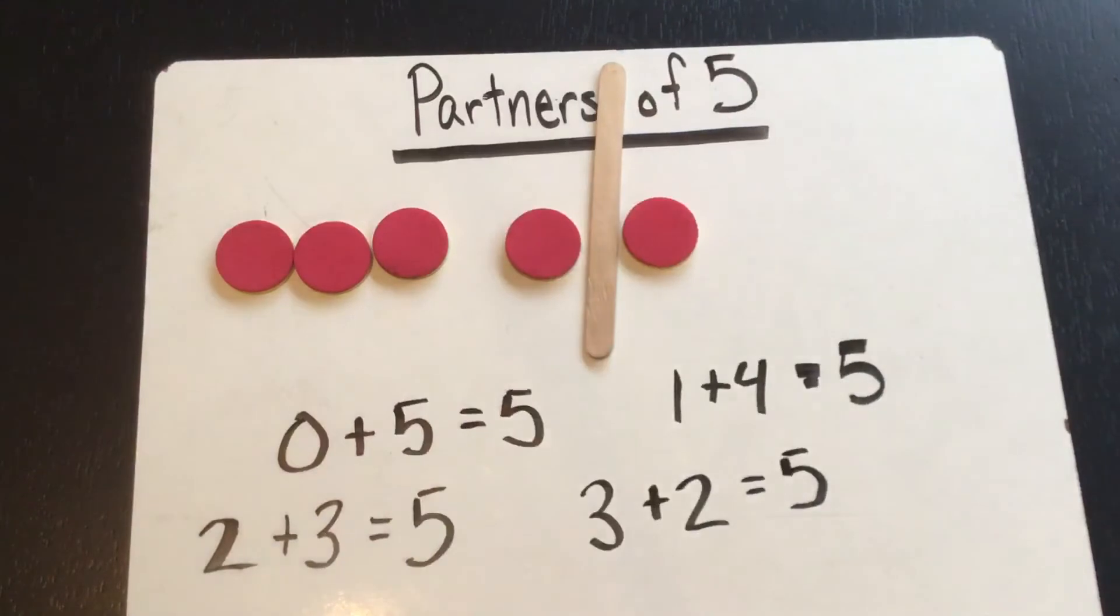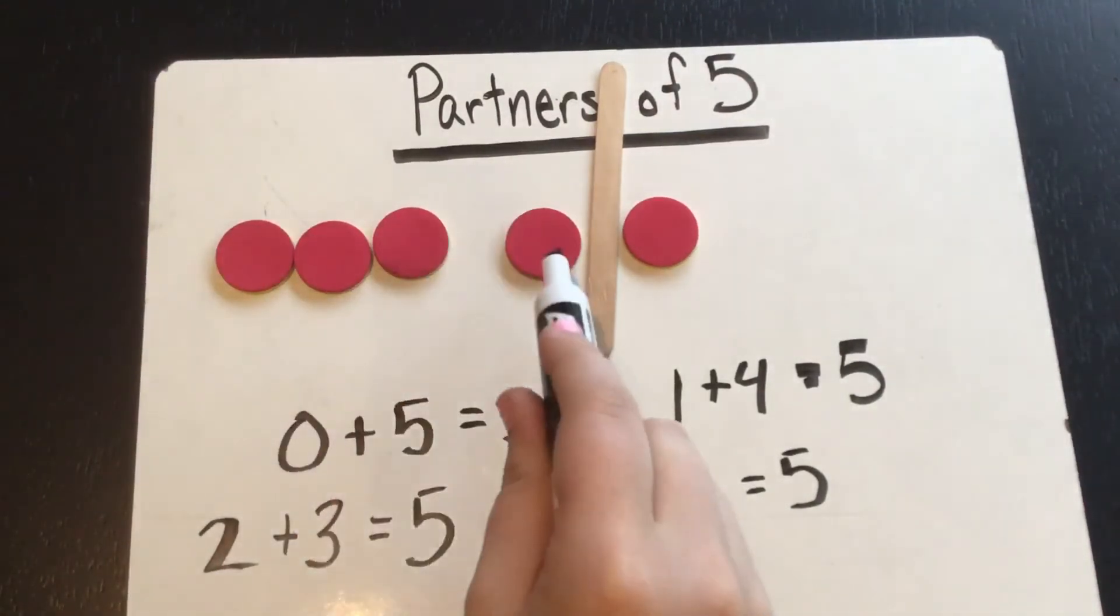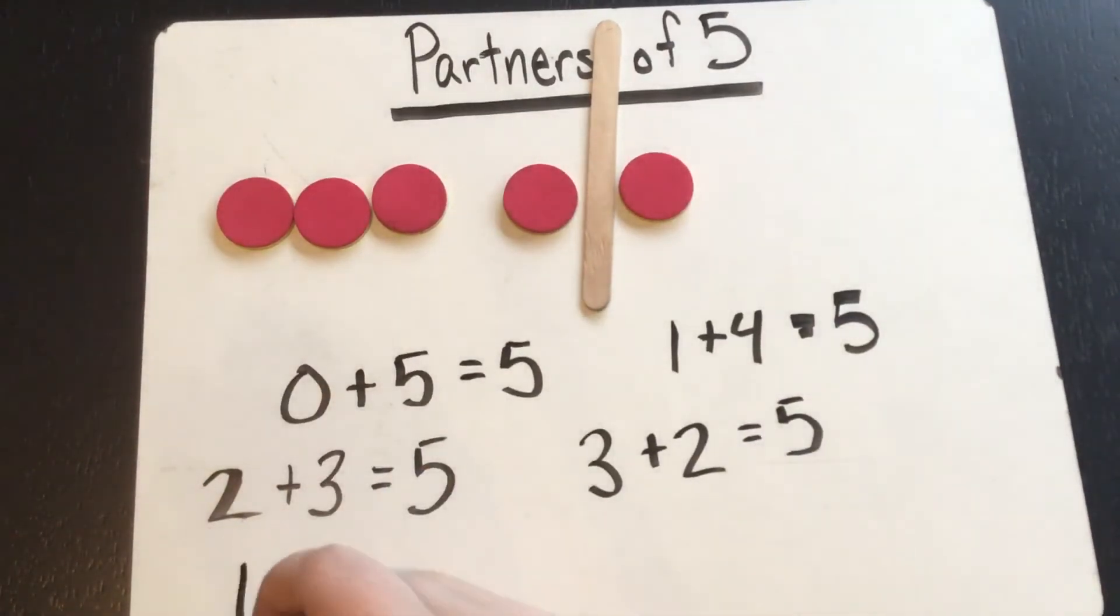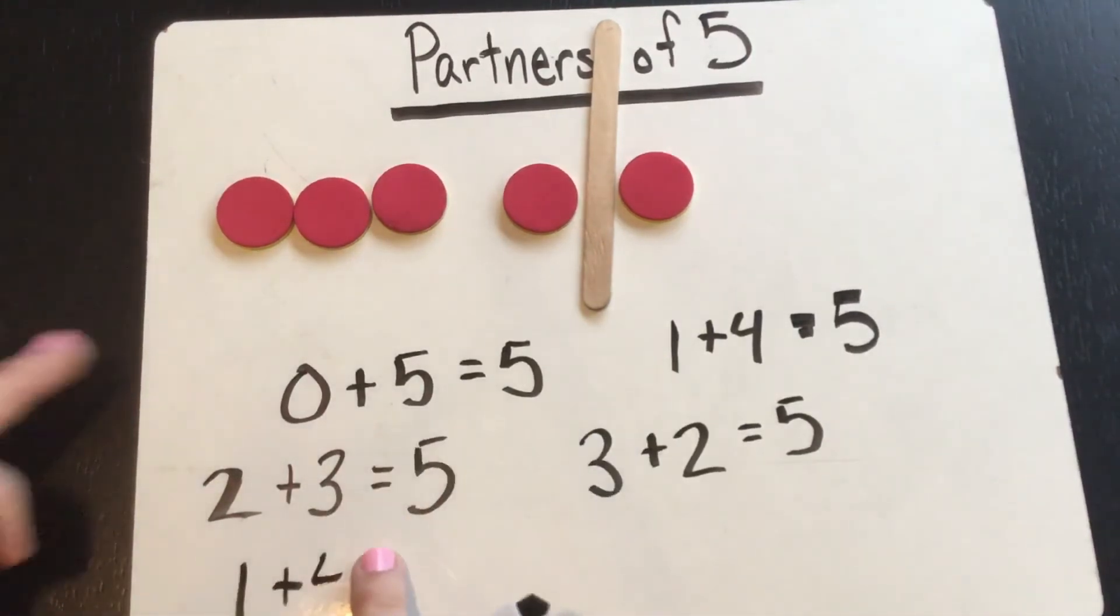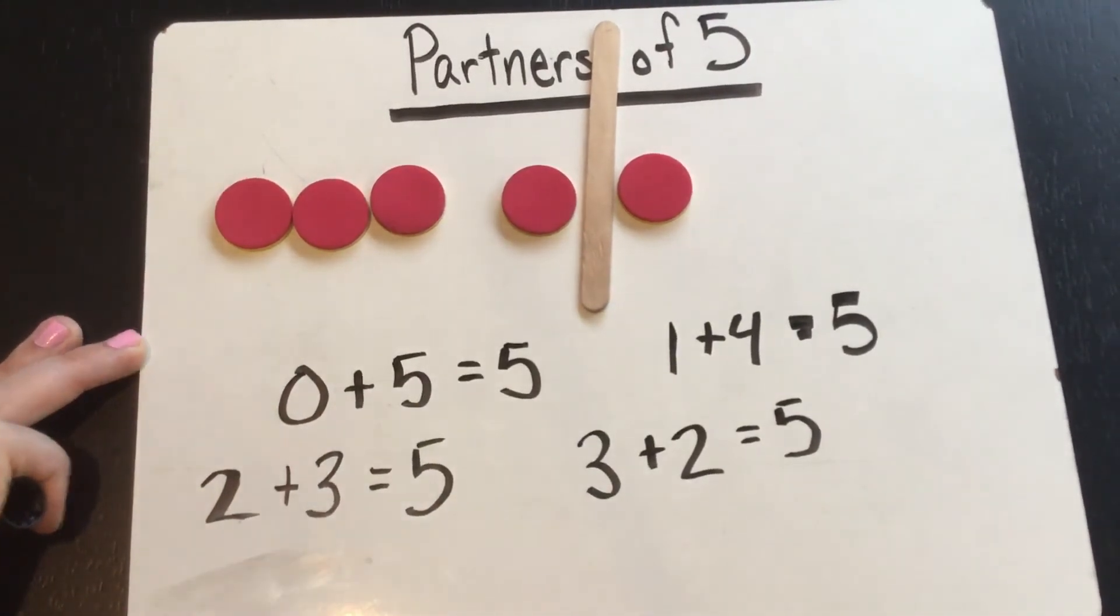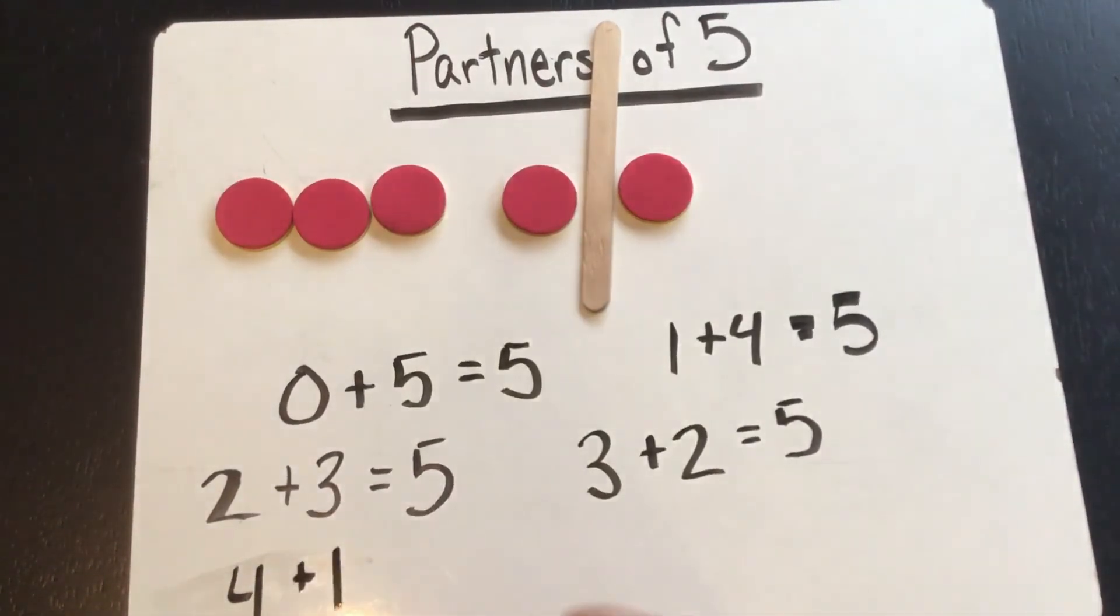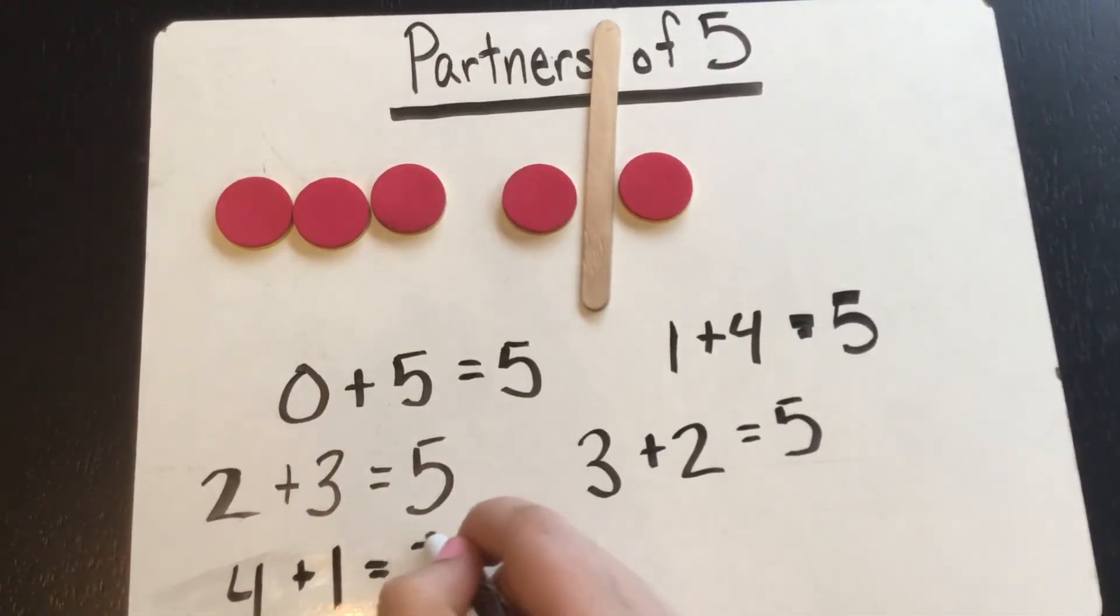Move it again. We have one, two, three, four on this side and one on that side. So the equation would be one plus four. I did that one backwards. Let me try that again. It's okay to make mistakes. That one would be four plus one equals five.